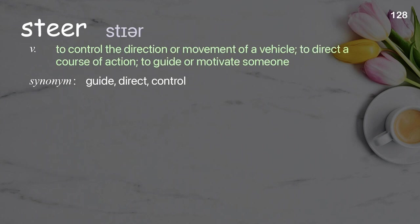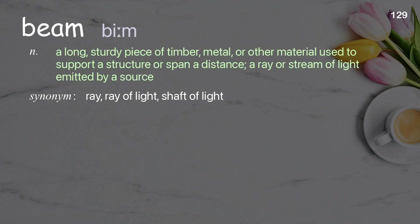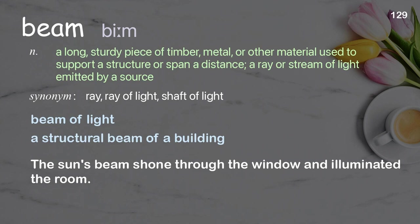Steer: to control the direction or movement of a vehicle; to direct a course of action; to guide or motivate someone. Examples: steer a steady course, steer a conversation. The captain told him to steer the ship north. Beam: a long, sturdy piece of timber, metal, or other material used to support a structure or span a distance; a ray or stream of light emitted by a source. Examples: beam of light, a structural beam of a building. The sun's beam shone through the window and illuminated the room.